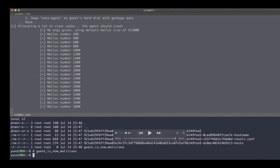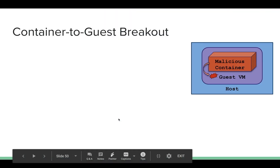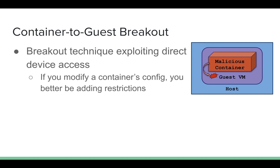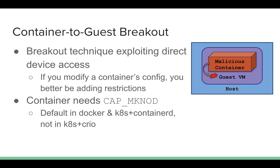That's great — we got a way to break out of the container and execute code on the guest using a breakout technique that exploits direct device access and the lack of a device cgroup. It really shows that if you modify a container's configuration, you should only be adding restrictions — you don't know what effects removing a restriction might have. Researchers might find a way to exploit that to break out. Note: the container does need the mknod capability to exploit this issue, but that's default in most places. This issue received a CVE.